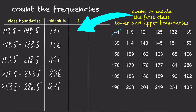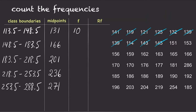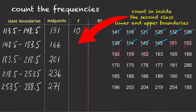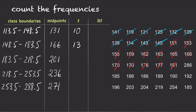Count how many data points fall into each class. For the first class, count any data points that fall between 113.5 and 148.5. So the frequency for the first class is 10. And for the second class, count any data points that fall between 148.5 and 183.5. So the frequency for the second class is 13.